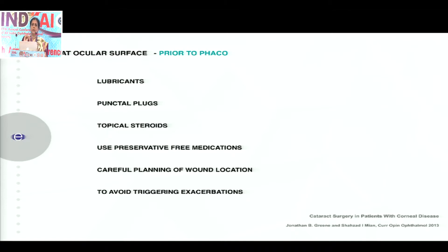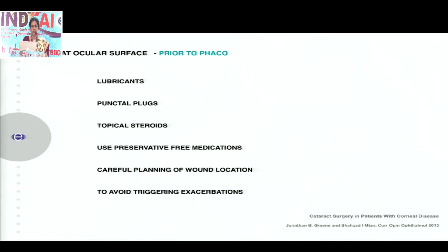Probably the best thing is to start looking right from the ocular surface. At least try to treat the ocular surface, because you need to do an optimal biometry in these patients. You want a comfortable patient post-op. If you have not treated the dry eye disease, it could be an additive problem. So you need to use adequate lubricants. If it's a severe dry eye coexistent with a corneal disease, use punctal plugs. Treat the inflammation with topical steroid drops prior to surgery. Definitely use preservative-free medications only.